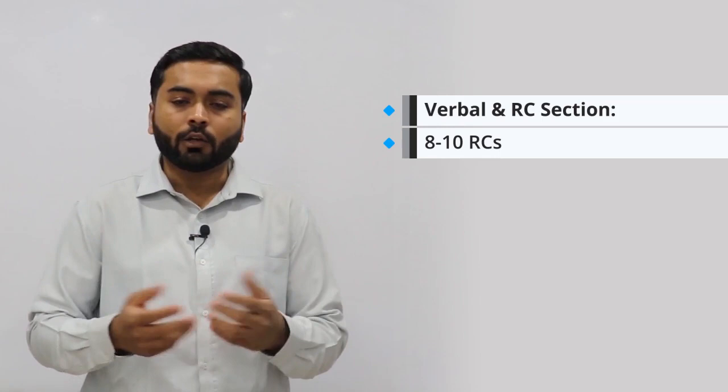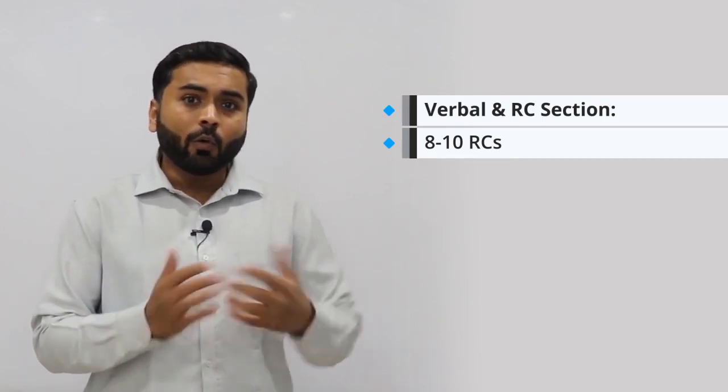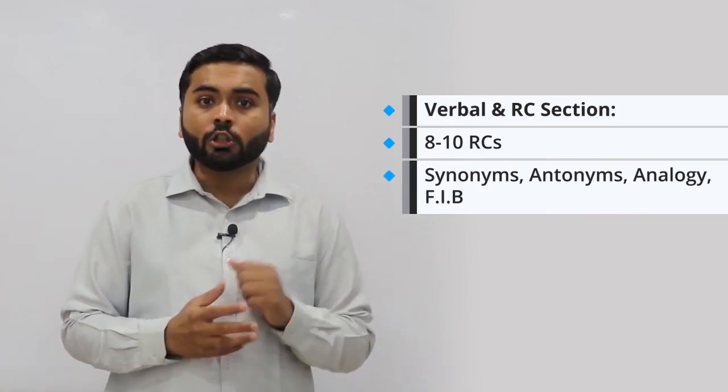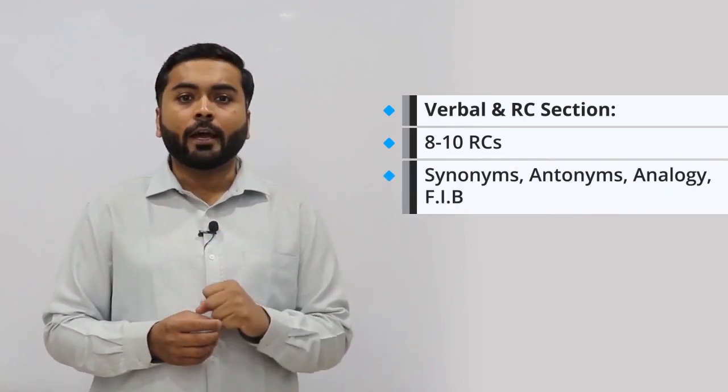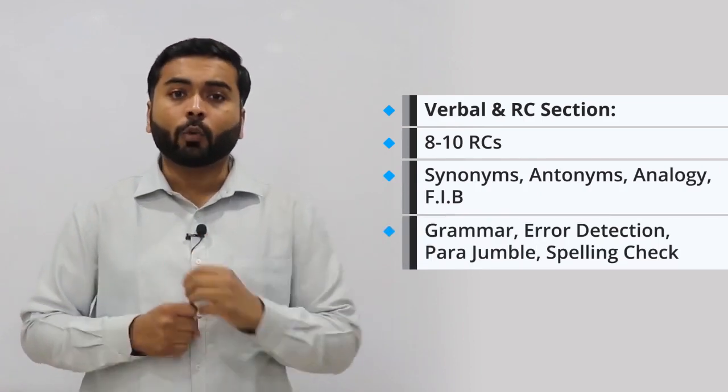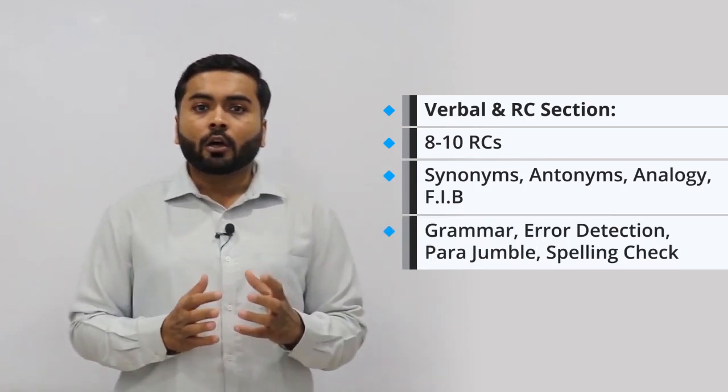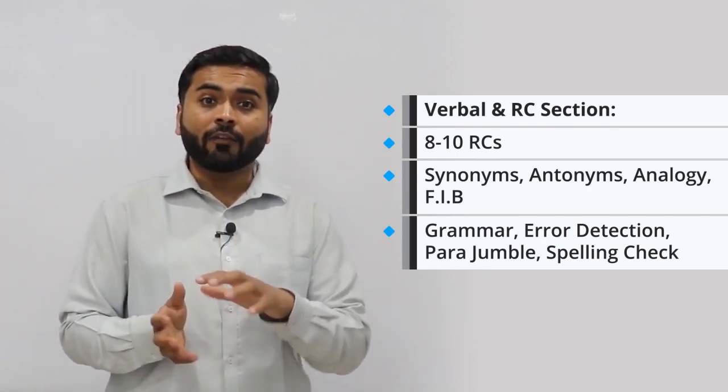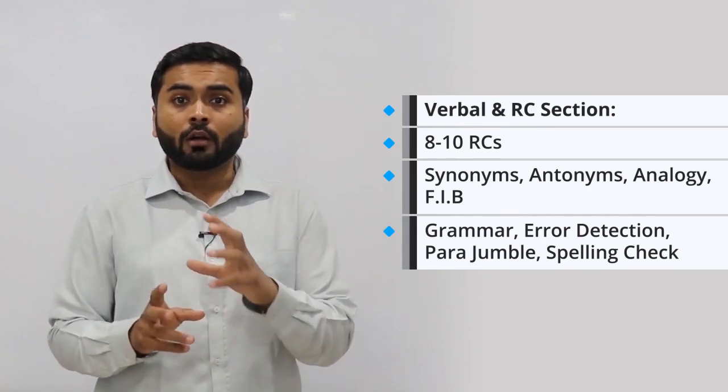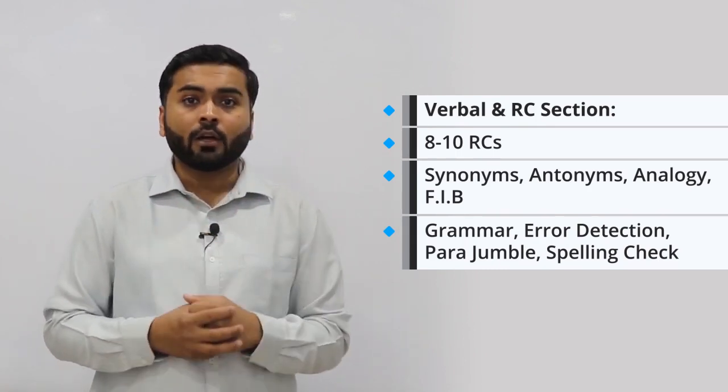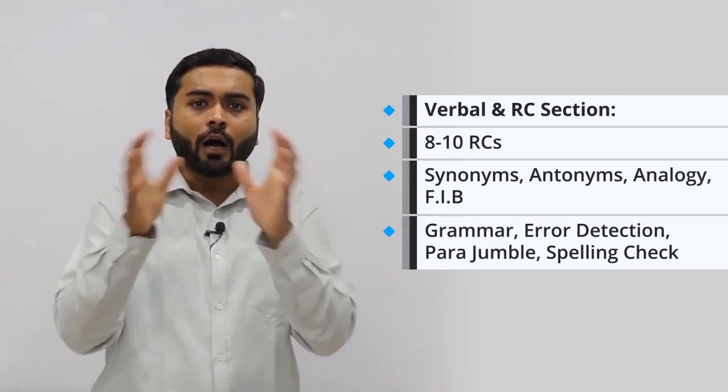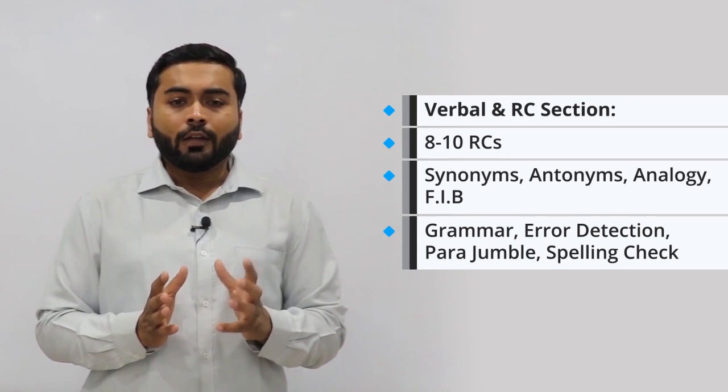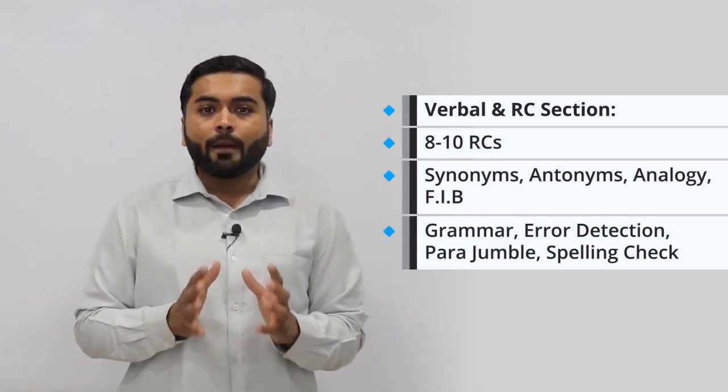The remaining questions would have synonyms, antonyms, analogies, fill in the blanks, grammar usage based questions, error detection, para jumbles, spelling errors, rectifying the spellings or guessing the right spelling out of the given four options. This is the general type of questions which comes in SNAP. If you are good at vocabulary and grammar, you would have understood that around more than 30 questions one can easily attempt.